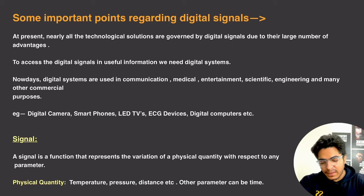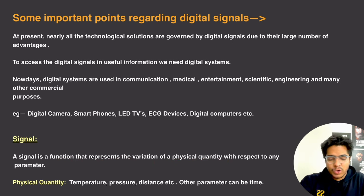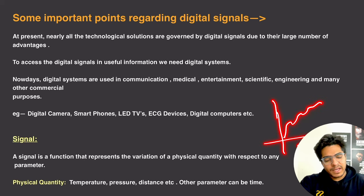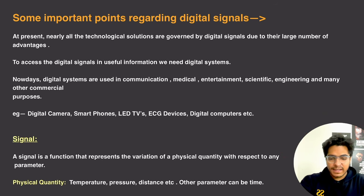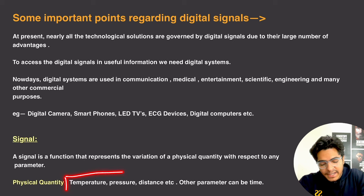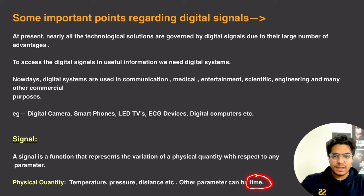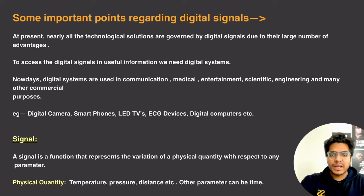Let's see the signal definition. A signal is a function that represents the variation of a physical quantity with respect to any parameter. For example, temperature changes with respect to time. Physical quantities can be temperature, pressure, or distance, and when we track their change with respect to a parameter and make a graph, that's a signal.